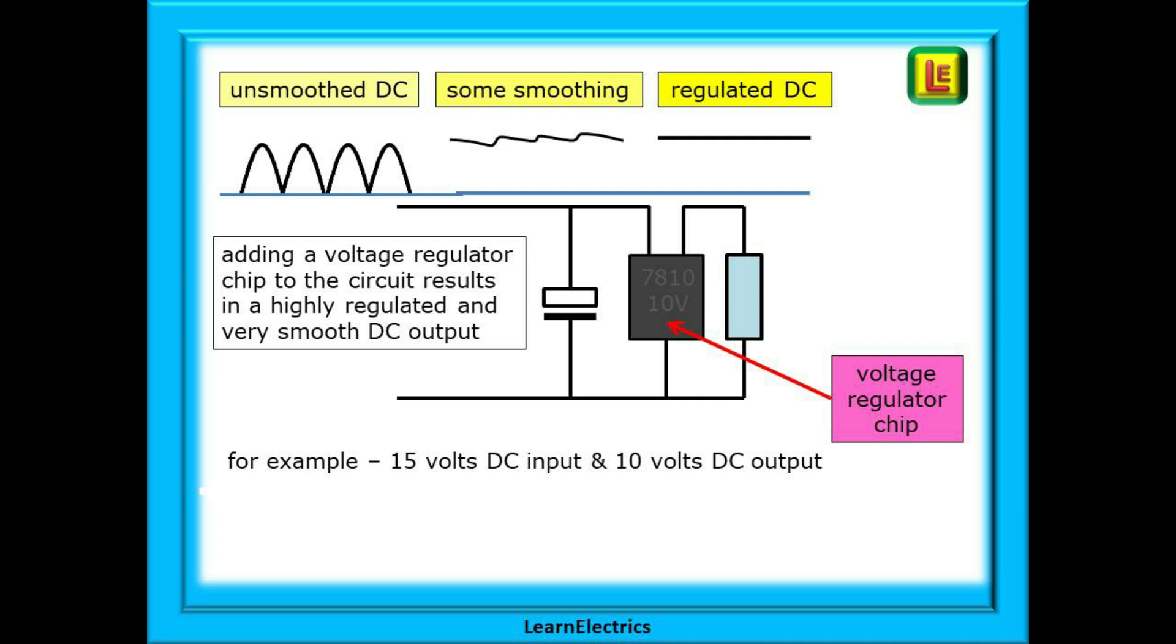Looking at the waveforms at the top of this slide you can see how the DC voltage has been smoothed by the capacitor and then smoothed and regulated even further by the voltage regulator to give us our ripple free output.